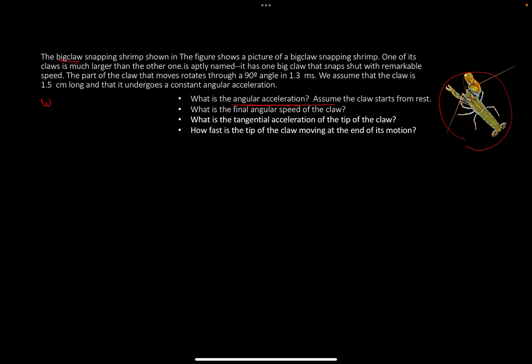What we know is that the angular speed w starts at zero. We assume the claw undergoes constant acceleration, so w₁ is zero. We don't know what w₂ is after acceleration. I'm writing down what I know: the time is 1.3 milliseconds, and it undergoes 90 degrees of rotation. So theta is 90 degrees, but in radians, it's π/2 radians.